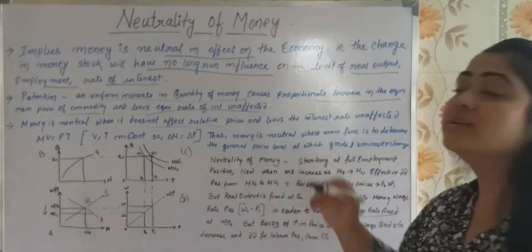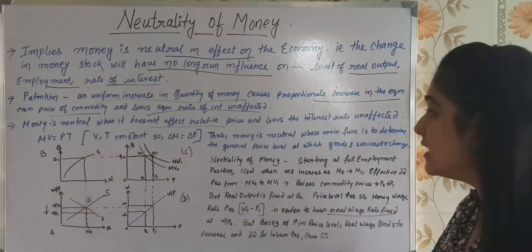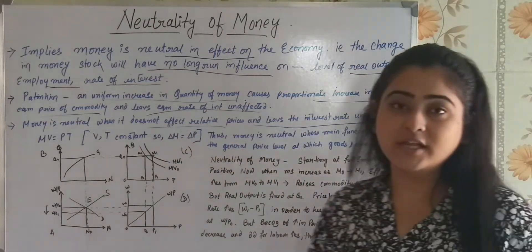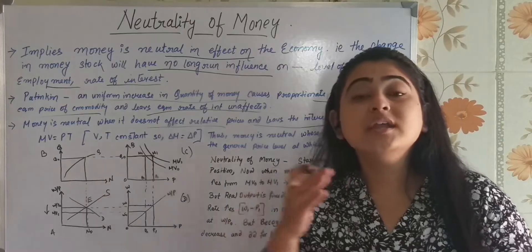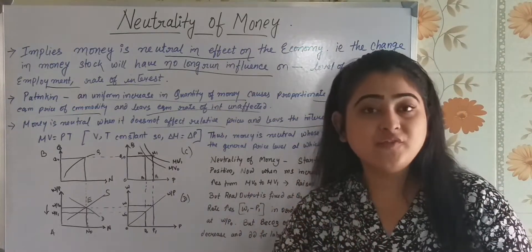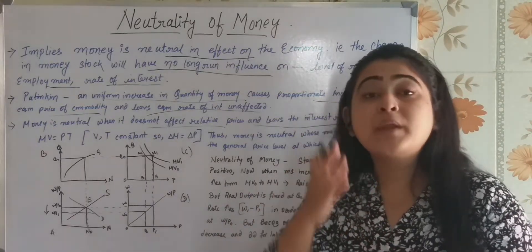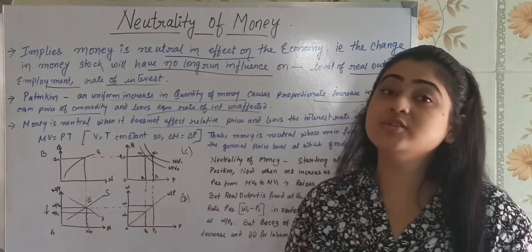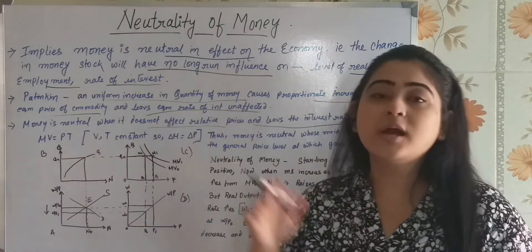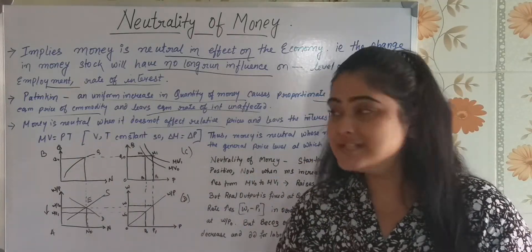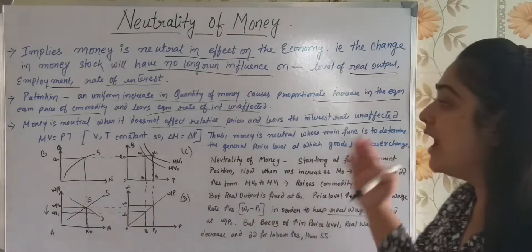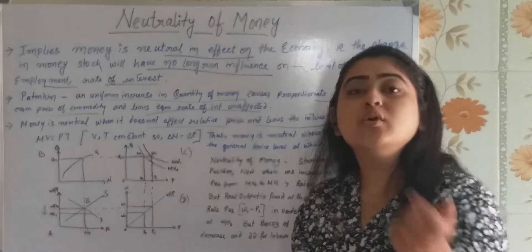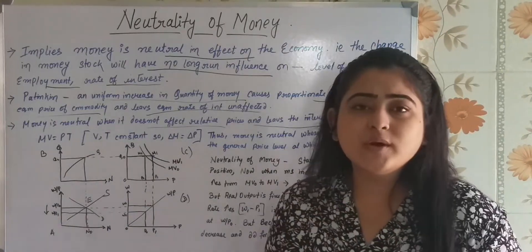The third point is: money is neutral when it does not affect relative prices and leaves the interest rate unaffected. The interest rate remains unaffected; the price of a particular commodity may change, but the price of the related commodity will not change. That is when we call money neutral.